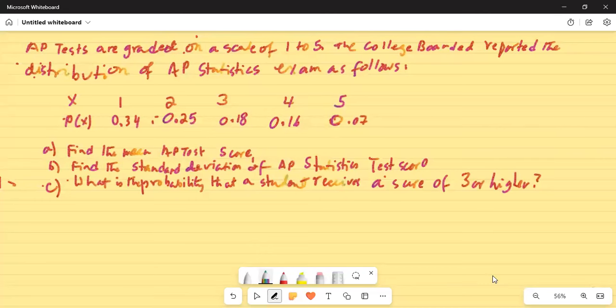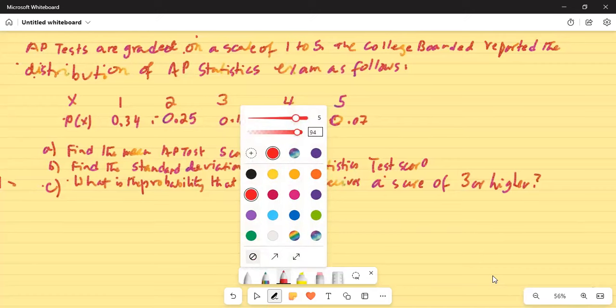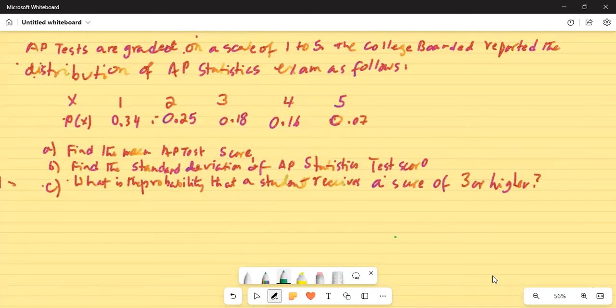Good day everybody, how are you all? Today we are going to discuss the expected value and the standard deviation of a discrete probability distribution. So I'll share my screen with you. AP tests are graded on a scale of 1 to 5. The College Board reported the distribution of AP Statistics exam as follows: